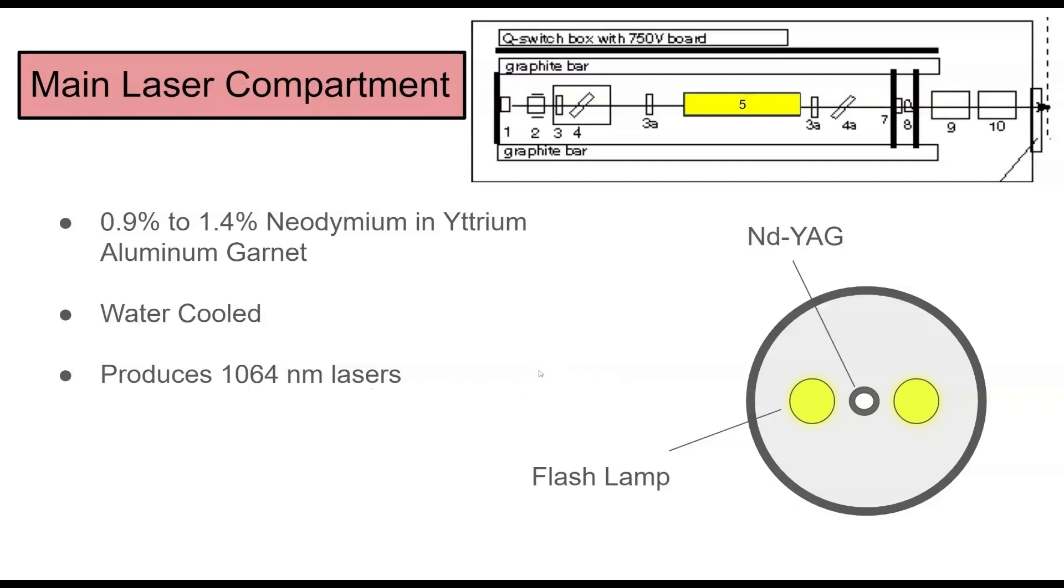Importantly, it produces 1064 nanometer lasers. As I specified, that the wavelength of 1064 is what we need to agitate the electrons to go and stimulate emission. That's because it also produces that wavelength right there. So that's the stimulated emission part.